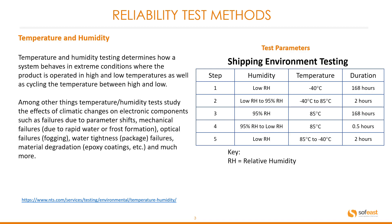It also covers mechanical failures due to rapid water or frost formation, optical failures such as fogging, water tightness in packaging, and failures in material degradation such as epoxy coatings, and much more. The table on the right shows an example of shipping environmental tests, where it goes from step one to five and the humidity and temperature starts at low, raising to high, and then back down to low again. The right-hand side shows the duration for each test. RH stands for relative humidity.